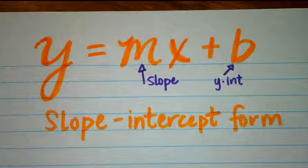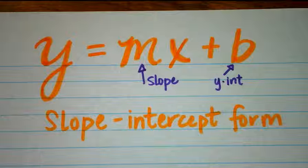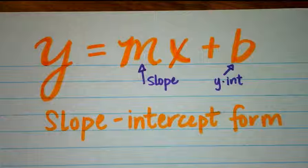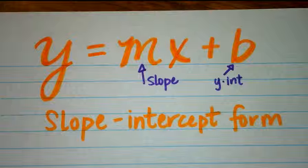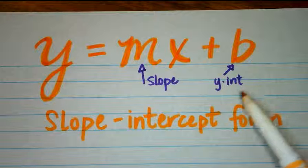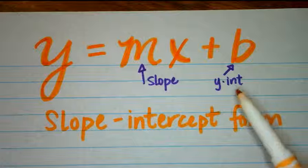We're going to work with just simple graphing first. Things that you need to remember: slope, we talk about being rise over run, and we always start by graphing the y-intercept first.